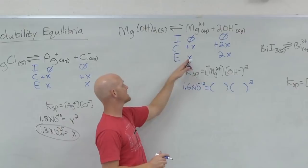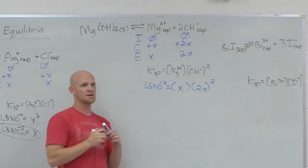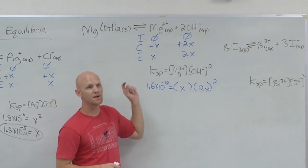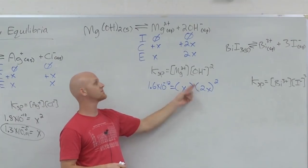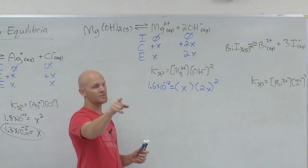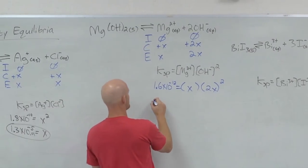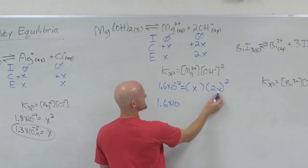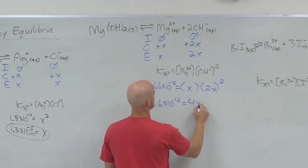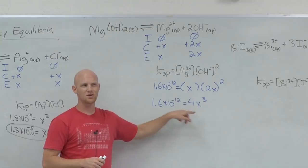So here the Ksp given was 1.6 times 10 to the negative 12 equals setting everything up exactly as it is. But my Mg concentration is X and my hydroxide concentration is 2X. And this is why students mistakenly try and put a 2 in right there because it often gets substituted in from the ice chart, but itself there's no 2. Awesome. You've got to square the 2 as well and you will get 4X cubed. So that's one thing students often forget as well, as they forget this squares the X and the 2.